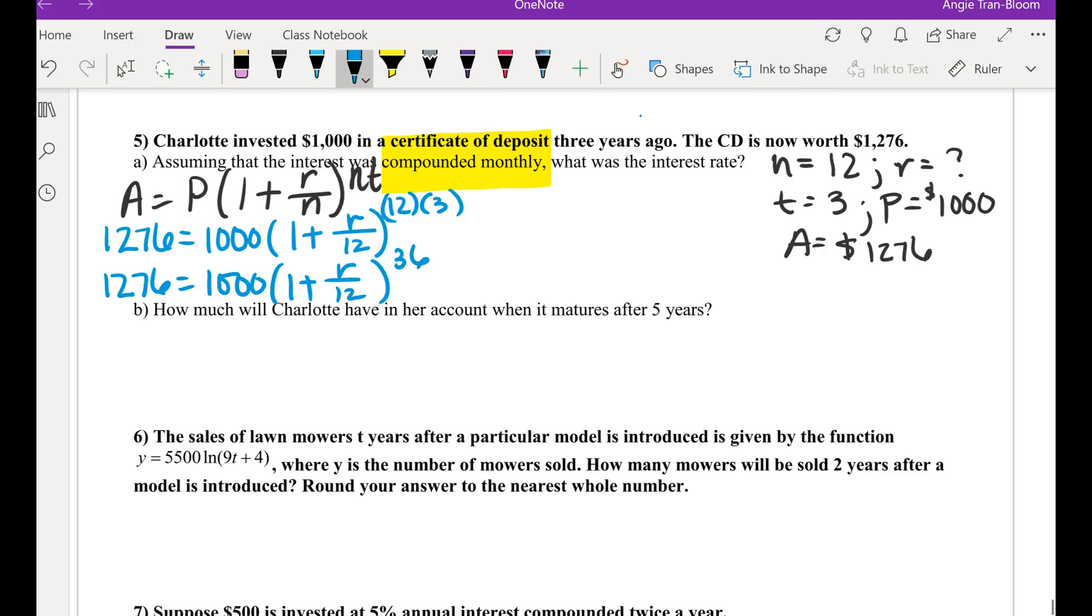Do we know A? That's right. A is how much she got at the end of her investment. Do we have everything we need except R? Yeah, and that's what we're supposed to look for. Here we go. Let's plug it in. A is $1,276. P is $1,000 times 1 plus the rate is unknown divided by N is 12, all to the power of 12 times what? Three, perfect.